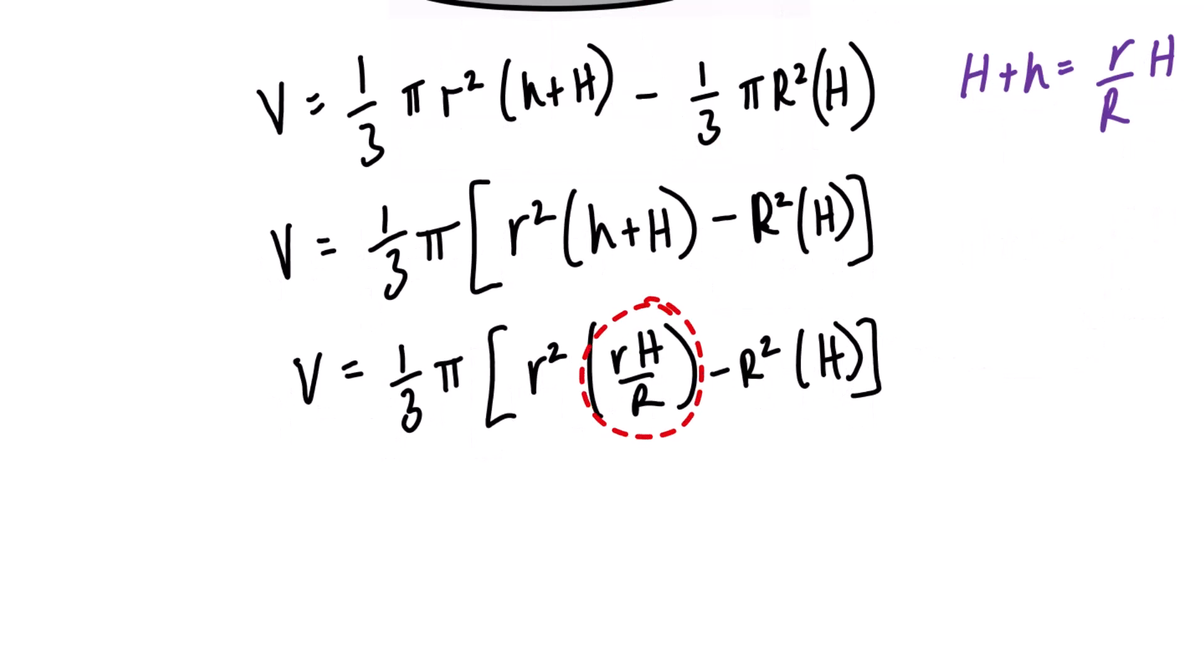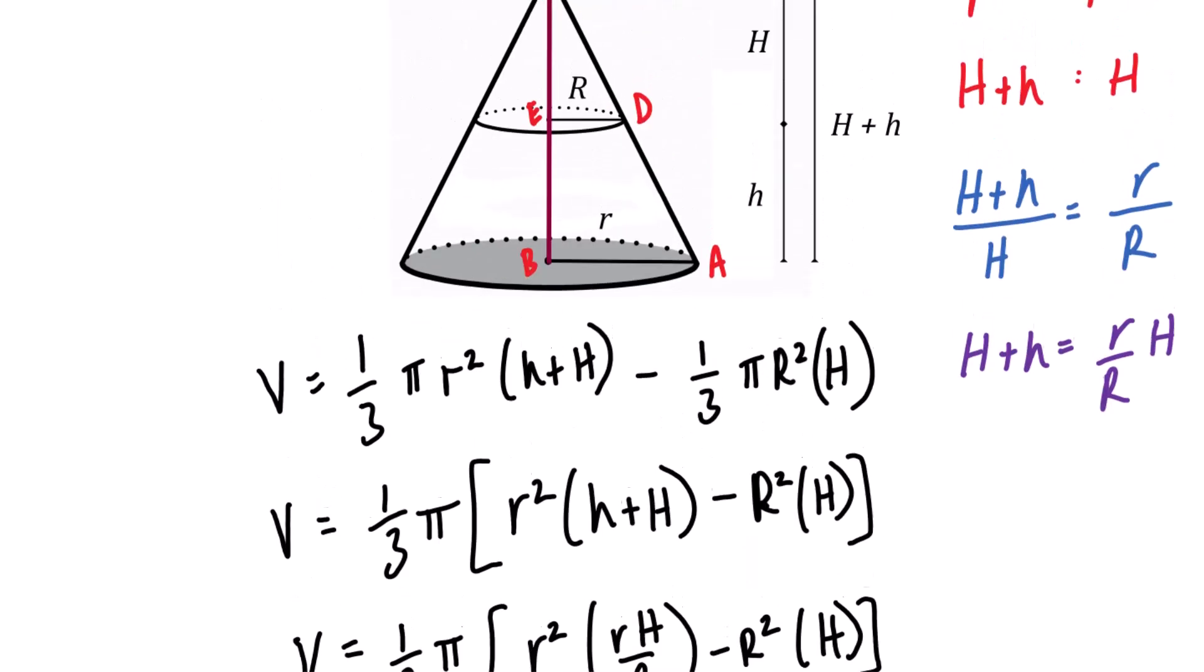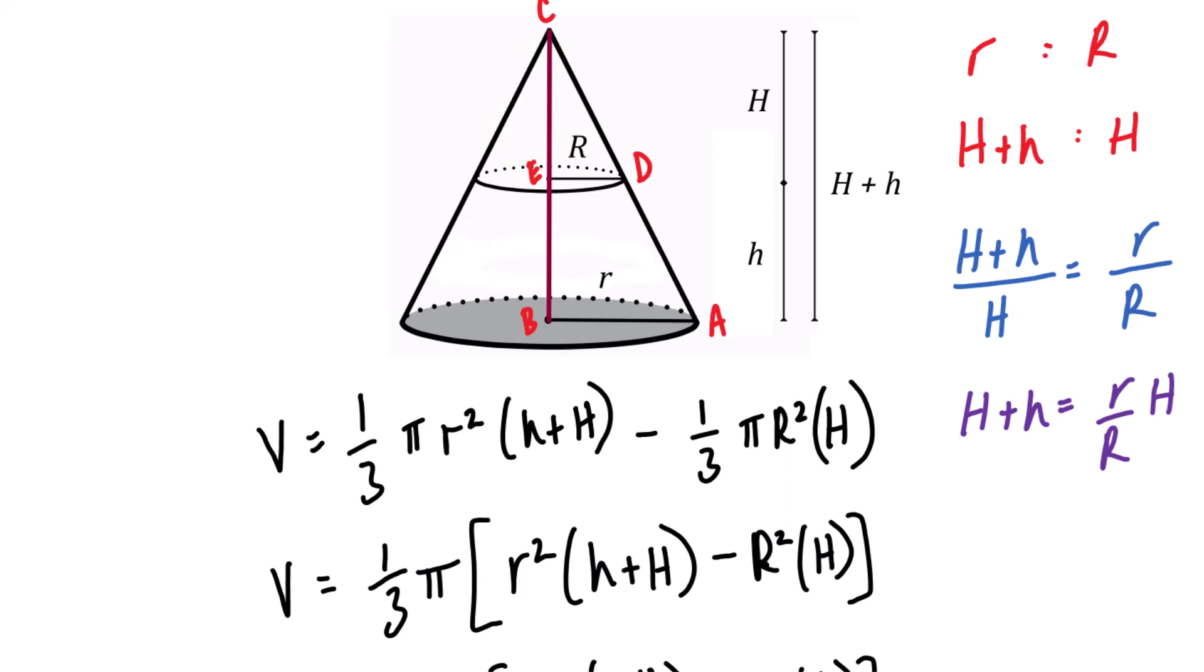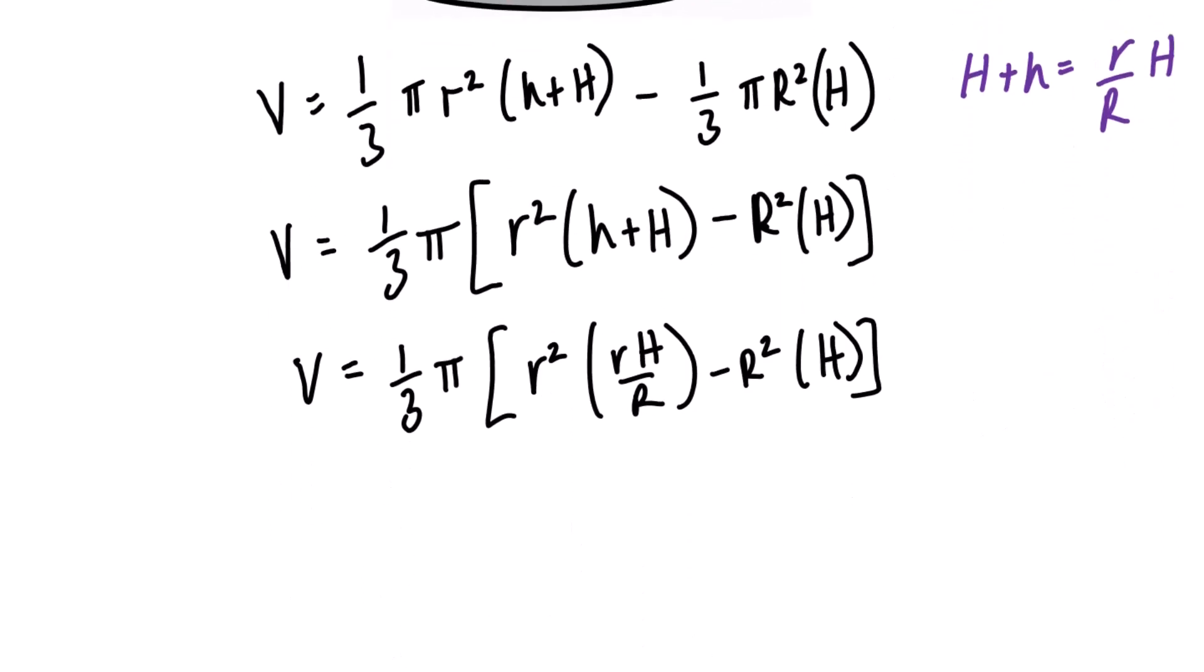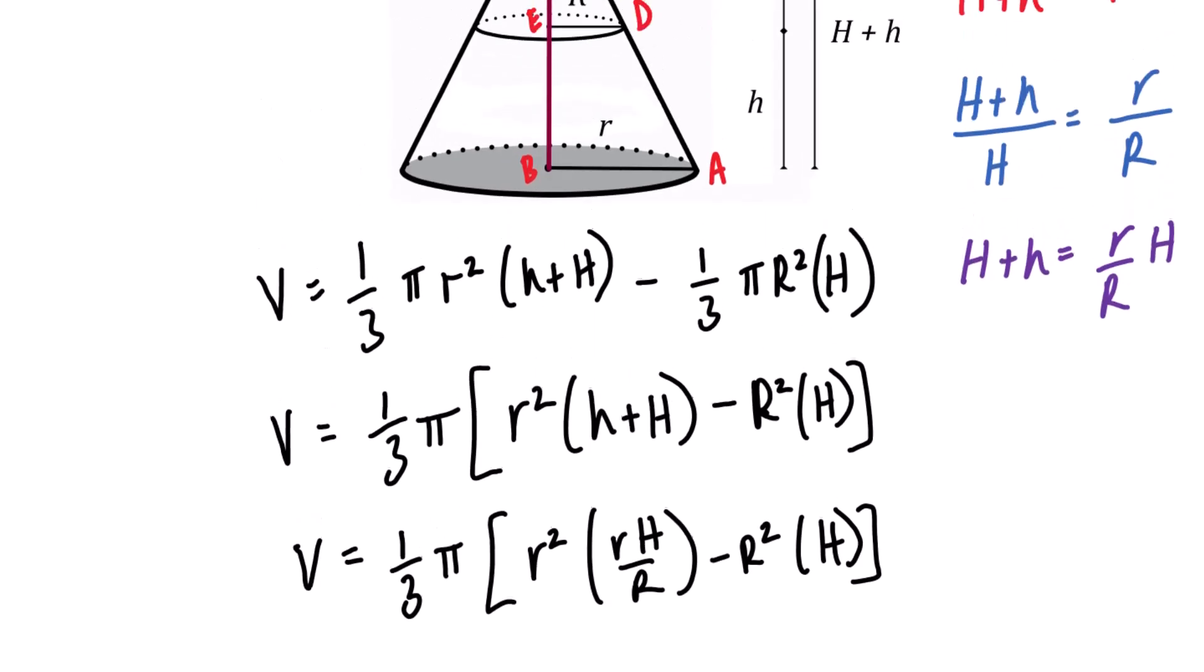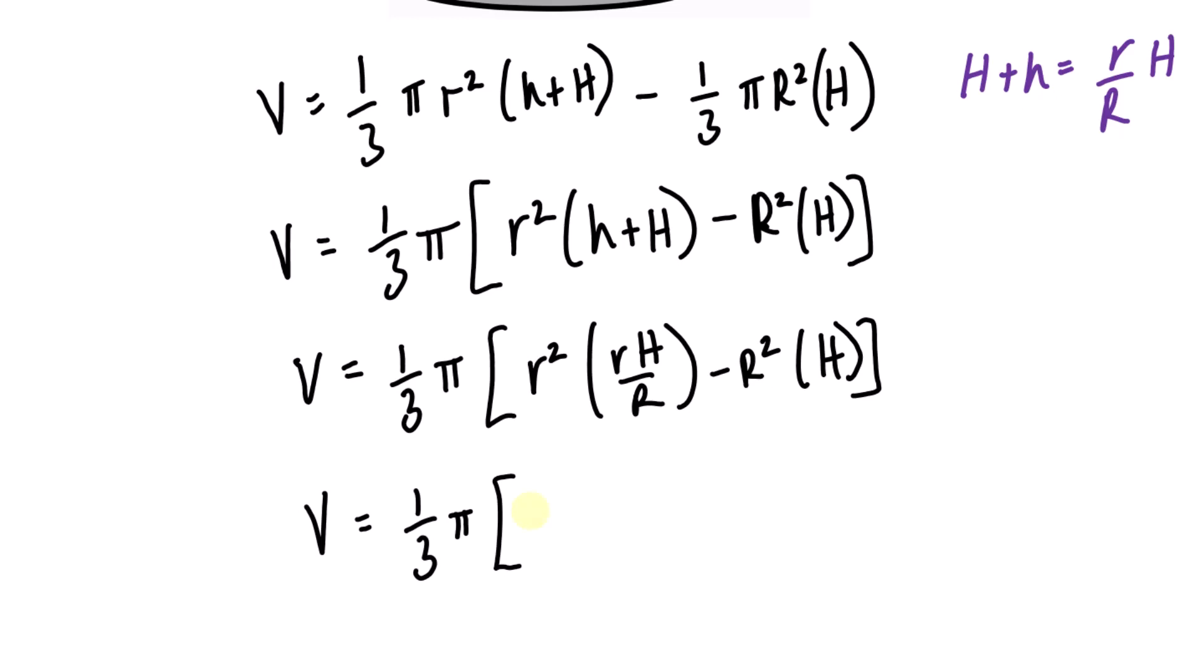As you can see, our equation is now in terms of lowercase and uppercase R and capital H. But capital H deals with the truncated portion which we do not want. So what we will do from this point is factor out this capital H from both of those terms and see if we can somehow replace it with something that relates to the frustum itself. Here's what happens. Notice at this point, I'll be factoring out capital H from both of those terms. The R squared and the r multiply to r cubed over capital R, take away R squared.